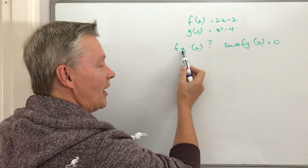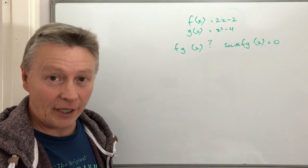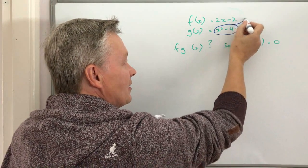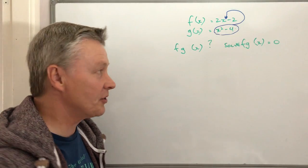What we're doing is we're saying that the output from g of x, which is x squared minus 4, we're going to plug that output into this function here, which is 2x minus 2.